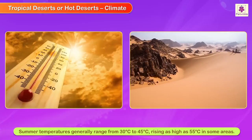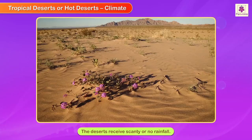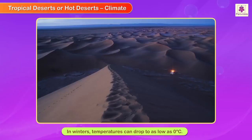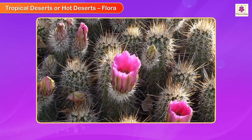Summer temperatures generally range from 30 degrees Celsius to 45 degrees Celsius, rising as high as 55 degrees Celsius in some areas. The deserts receive scanty or no rainfall, and some deserts do not receive rainfall for several years. In winters, temperatures can drop to as low as 0 degrees Celsius.